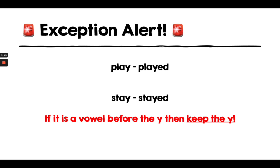There is an exception alert here though — words that don't follow this rule. So play and stay are examples of words that don't follow the swap the y rule, and there's a reason for that. Play and stay end with long vowel sounds — there is a vowel before the y. So in play, the letter a is before the y. In stay, the letter a is before the y. So if there is a vowel before the y in the root word, then keep the y.